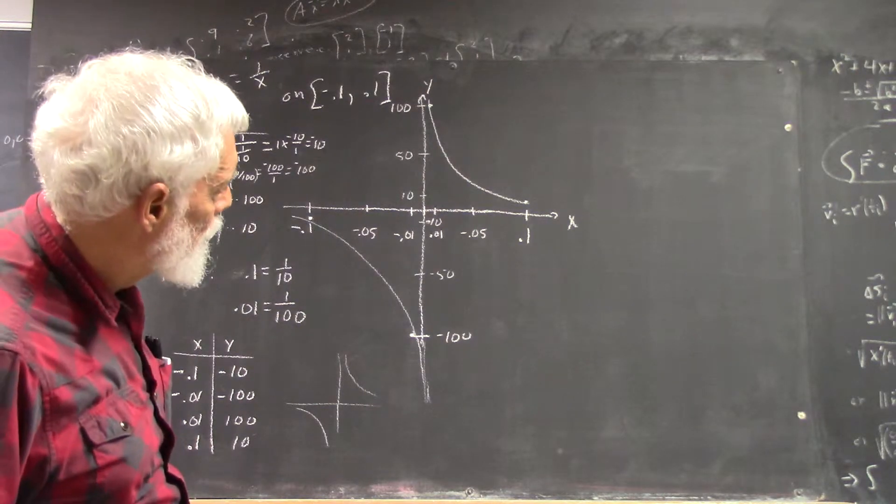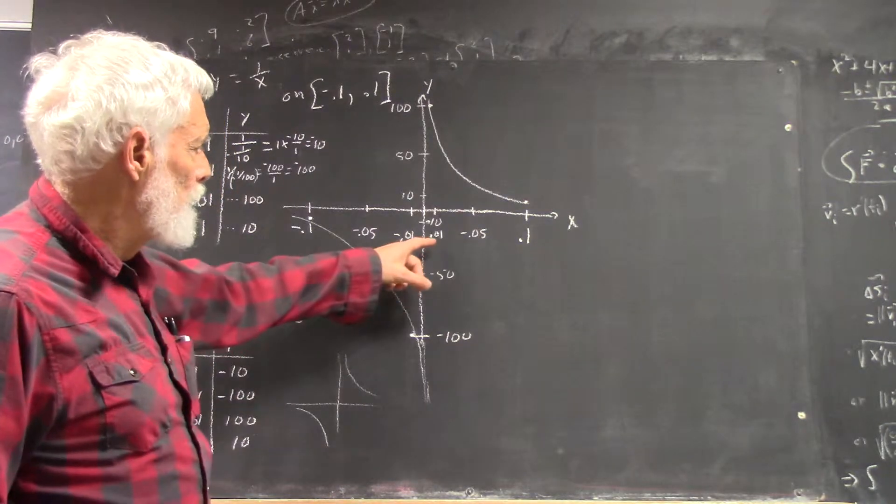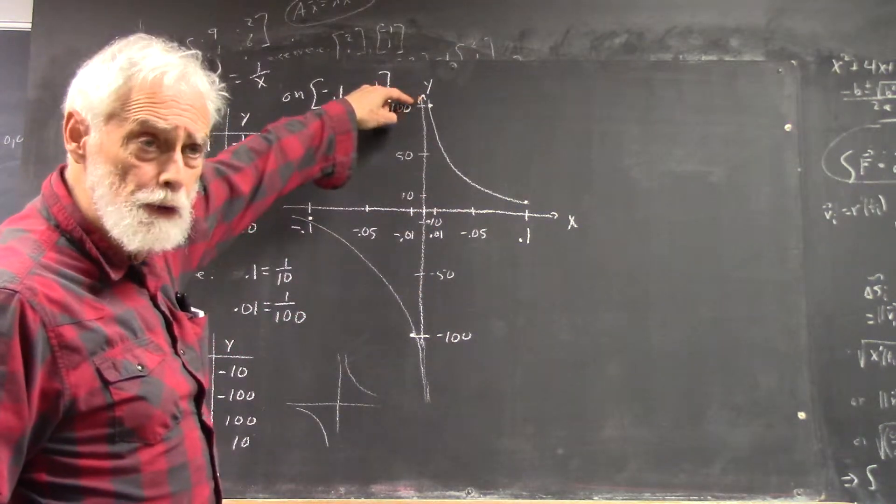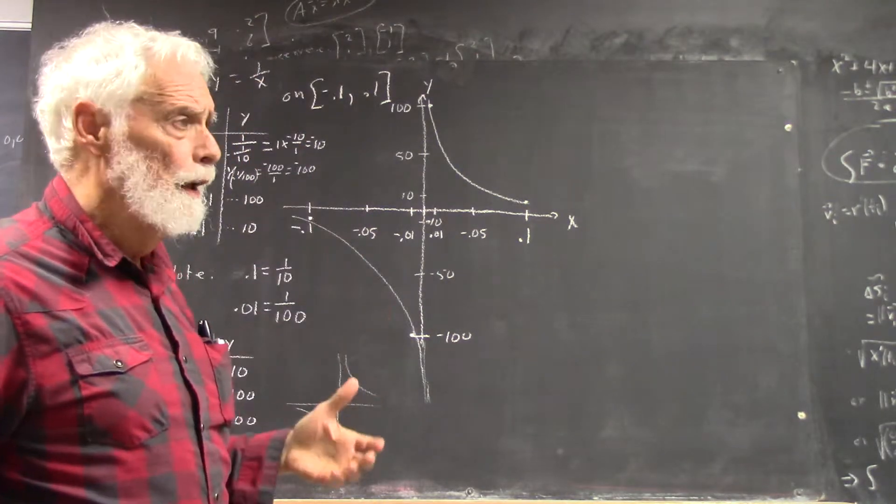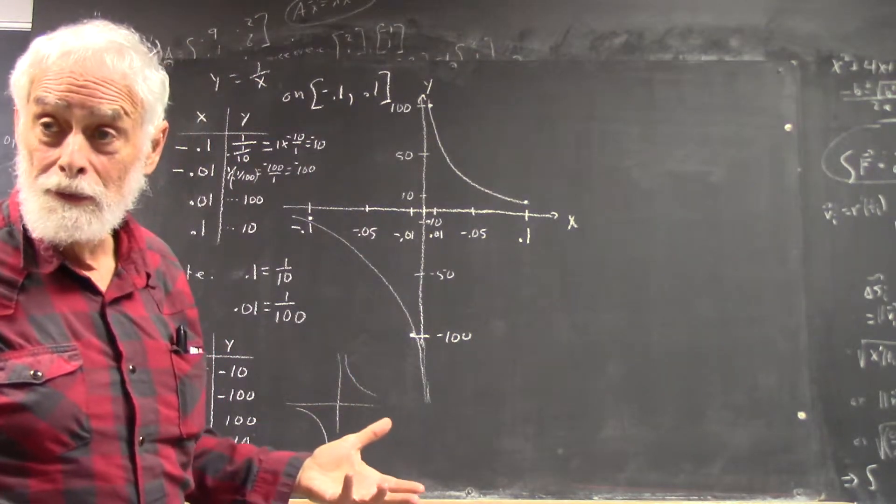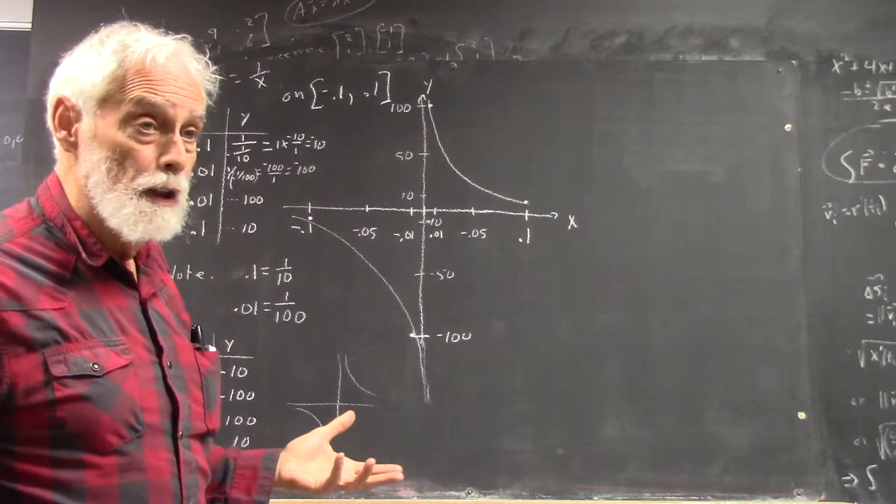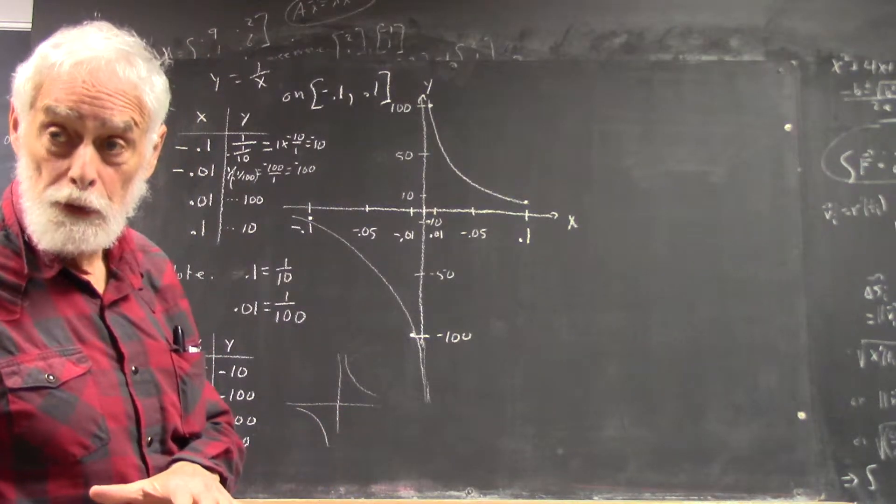So, we see that by the time you get to 0.01, this thing is 100 units high, right? Now, if we do our graph with the basic points, then all our y values are between negative 2 and 2, right?